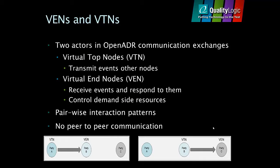There are two actors in OpenADR communication exchanges. The first actor is a virtual top node, referred to as a VTN. The VTN's role is to transmit demand response events to other nodes. The second actor is a virtual end node, referred to as a VEN. The VEN's role is to receive demand response events, respond to them, and to control demand-side resources. All communication is between pairs of VTNs and VENs.